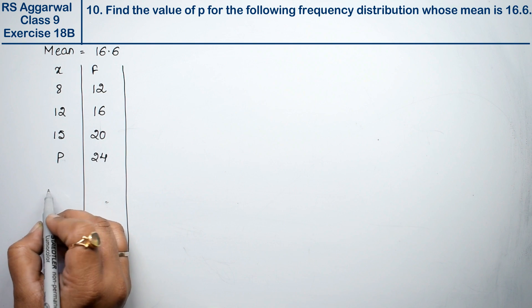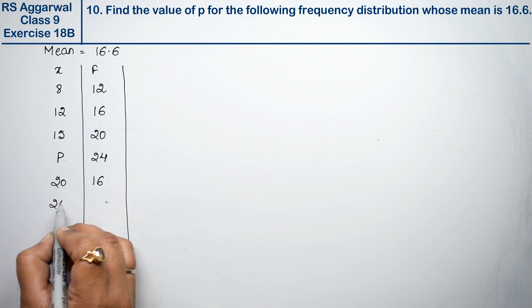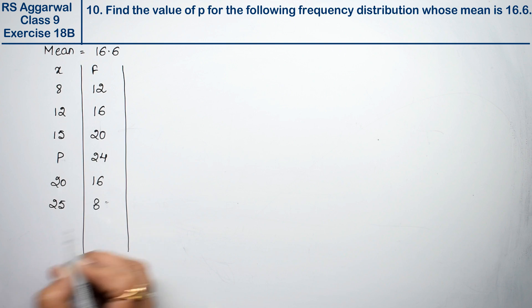Continuing the frequency distribution: x equals 20, frequency 16; x equals 25, frequency 8; x equals 30, frequency 4.